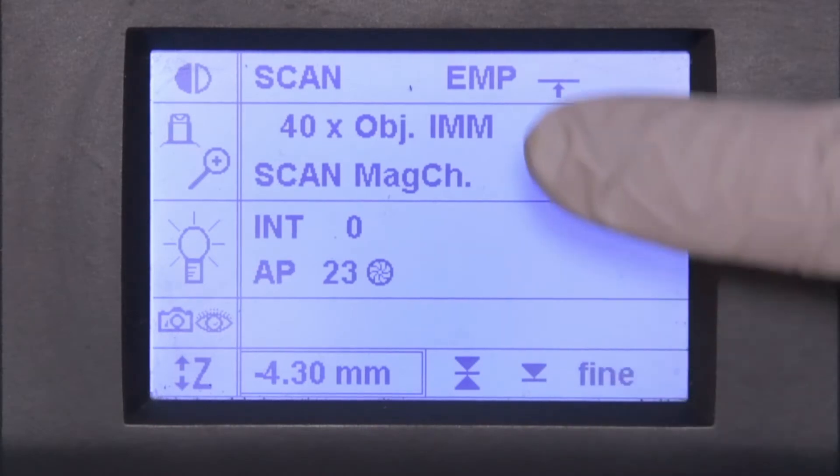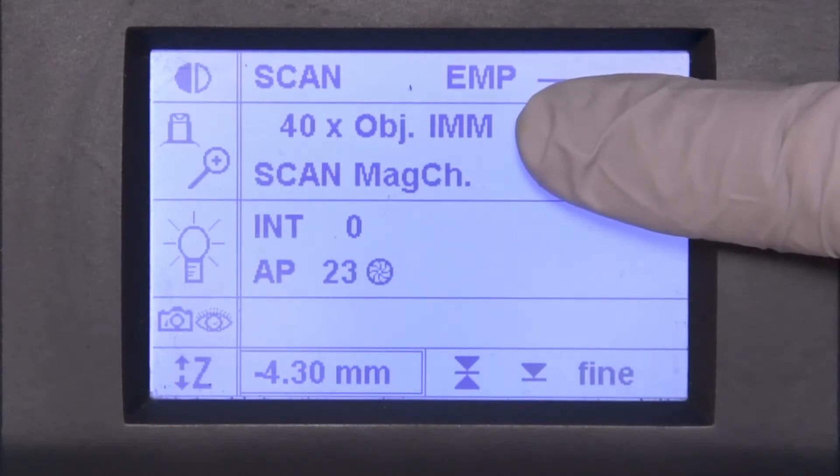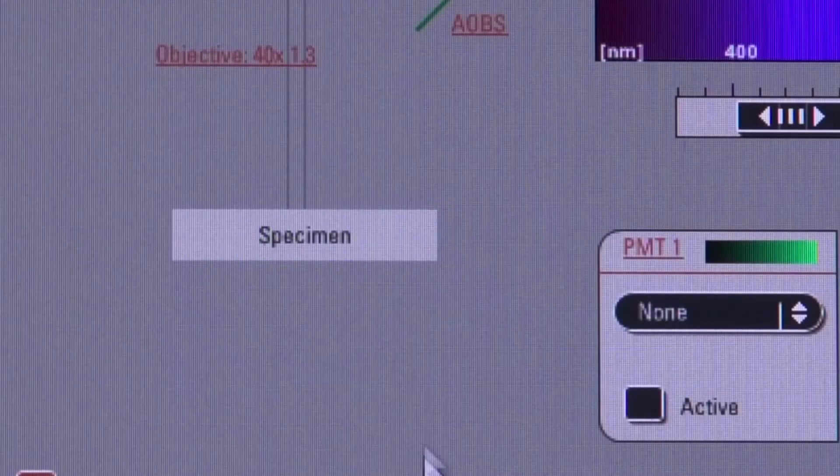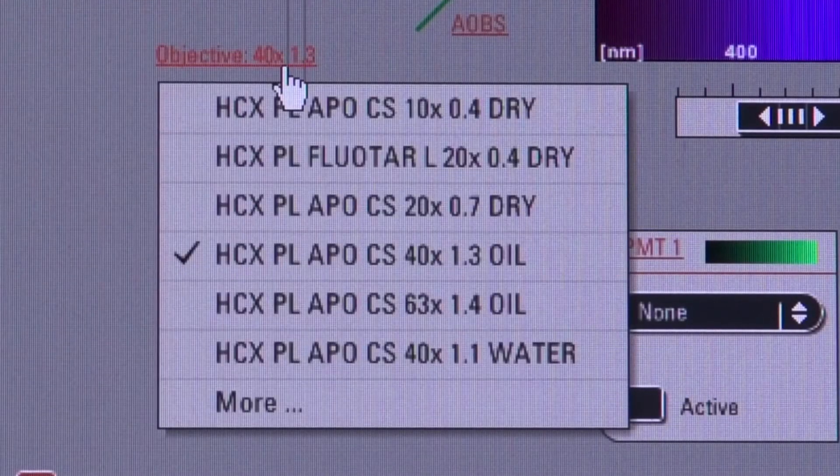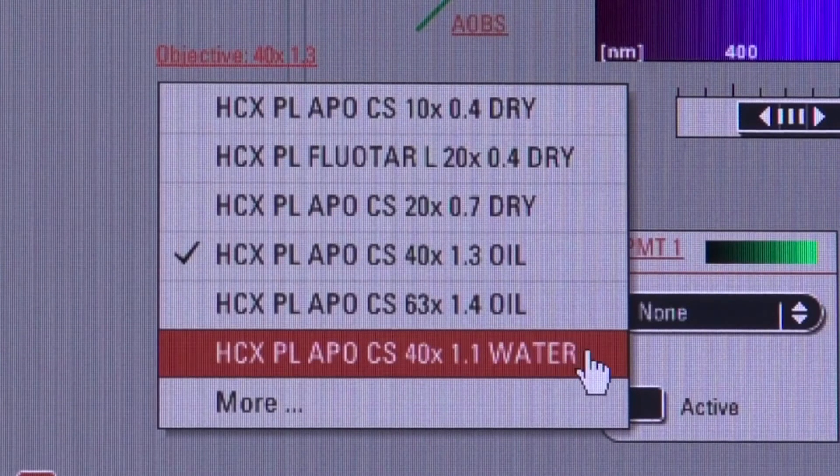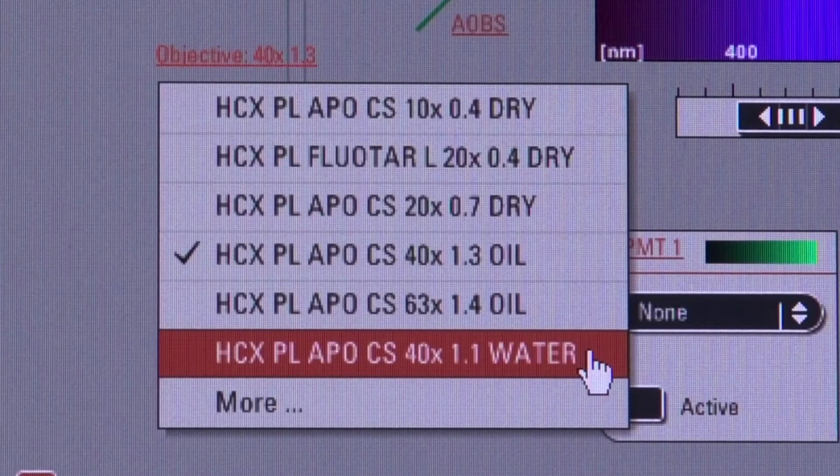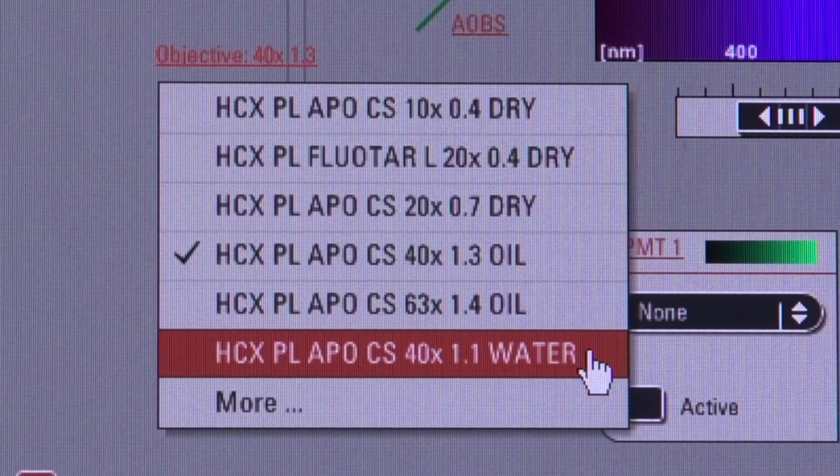Back on the front panel, you can see that it now shows us that this is an immersion lens. Back on our list, notice that we also have a 40X 1.1 NA water objective. This is a special lens that you would rarely use. However, make sure that you do not accidentally select this one and put oil on it. It is not corrected for oil, and your images will look terrible. Plus, we will have to clean off all that oil.